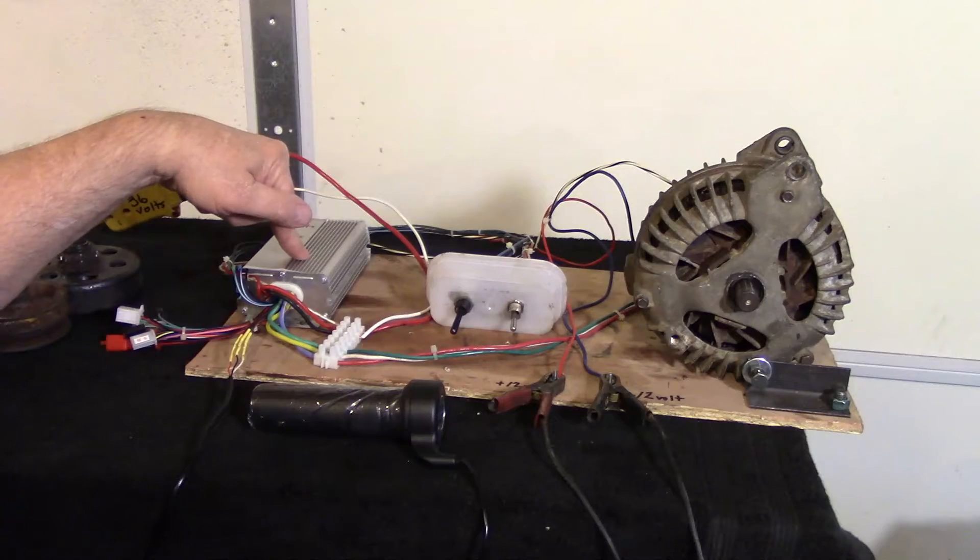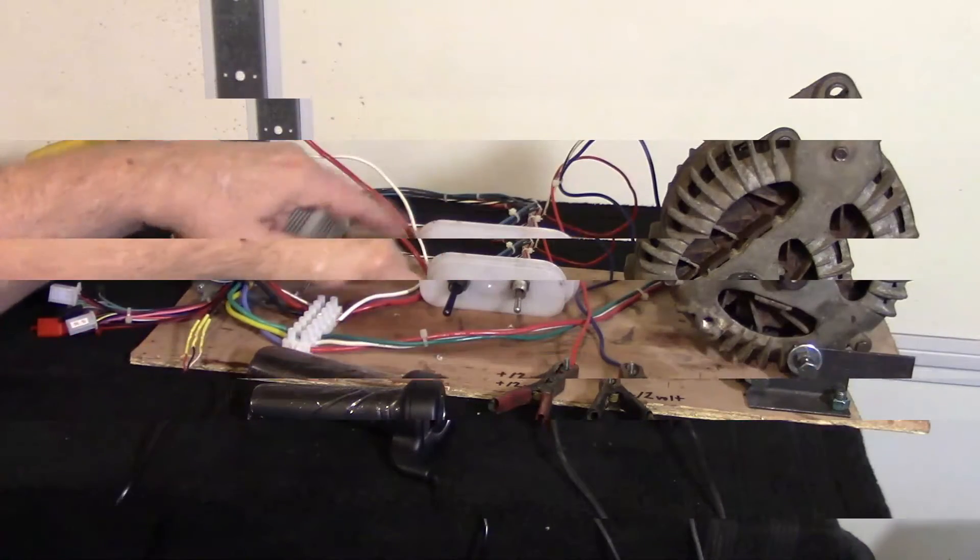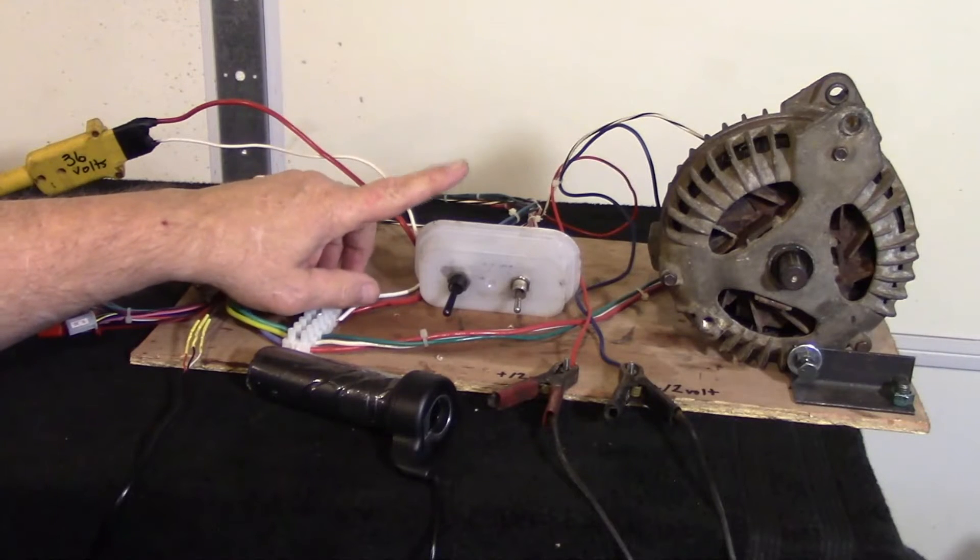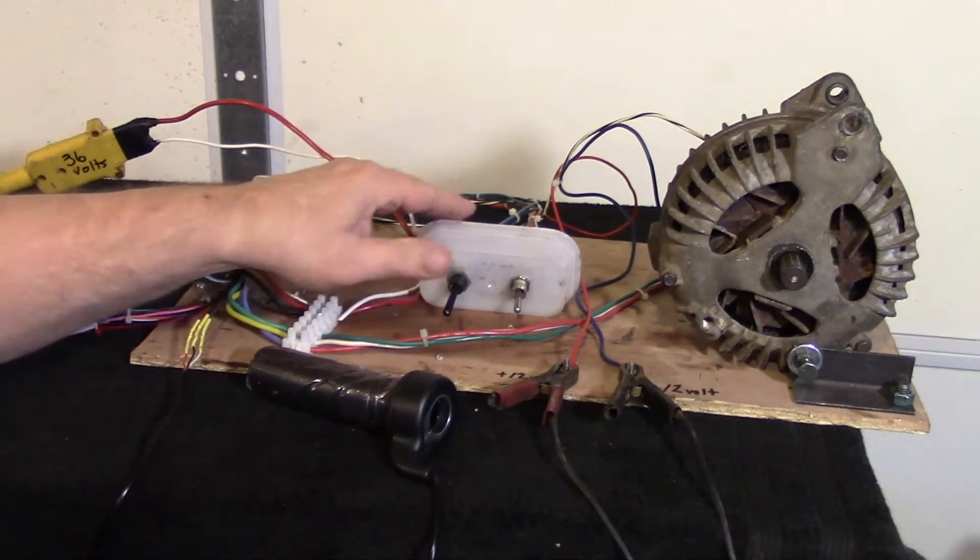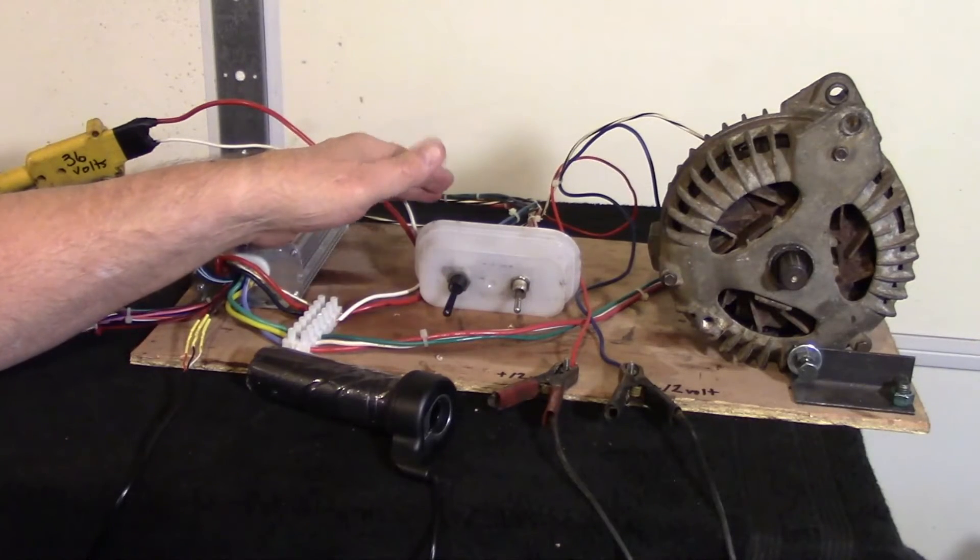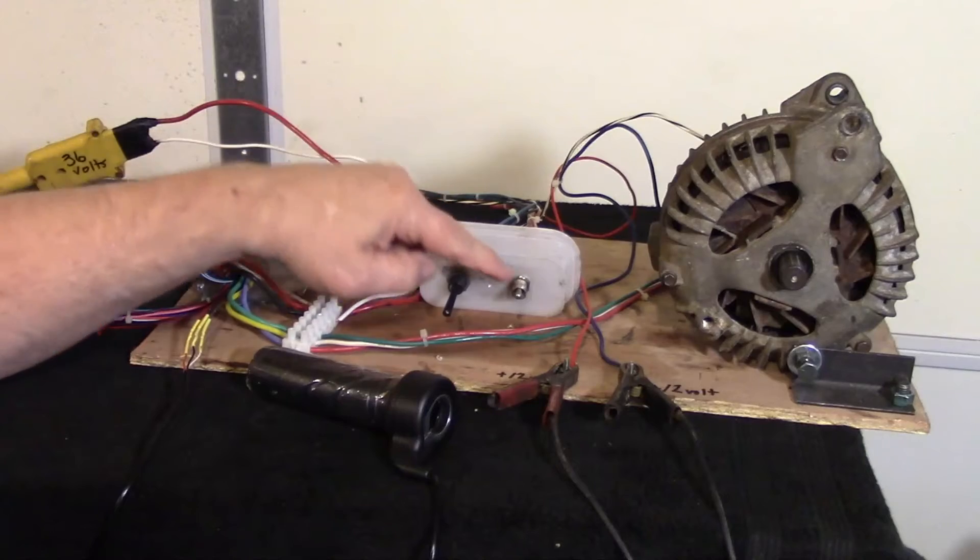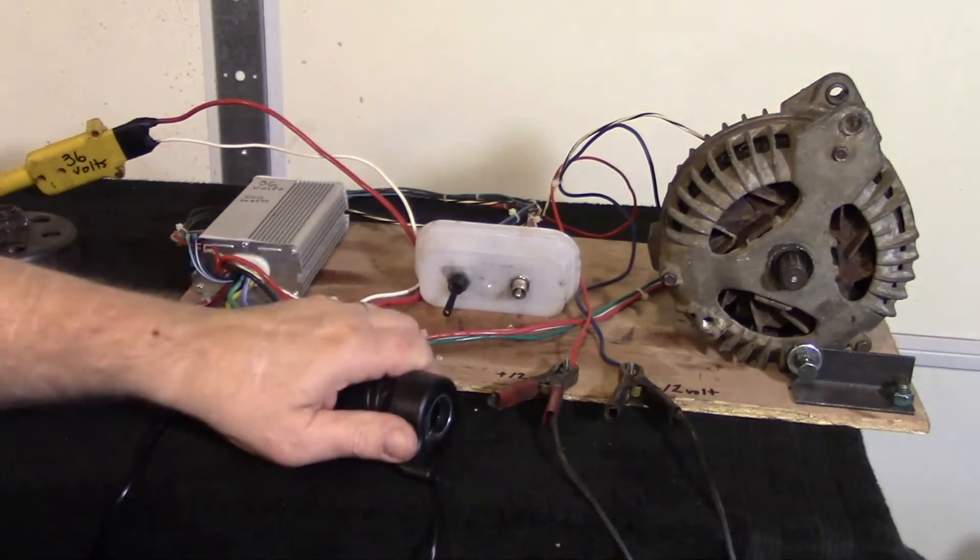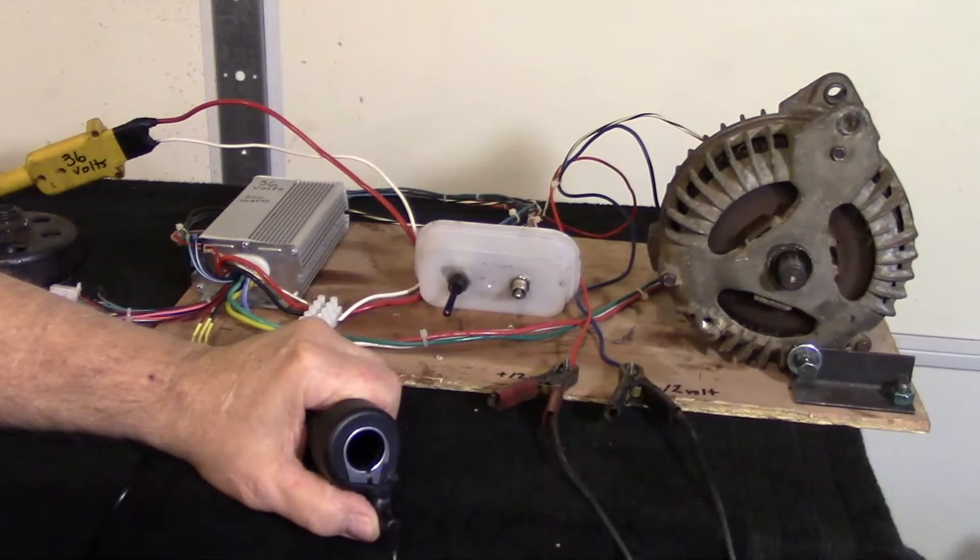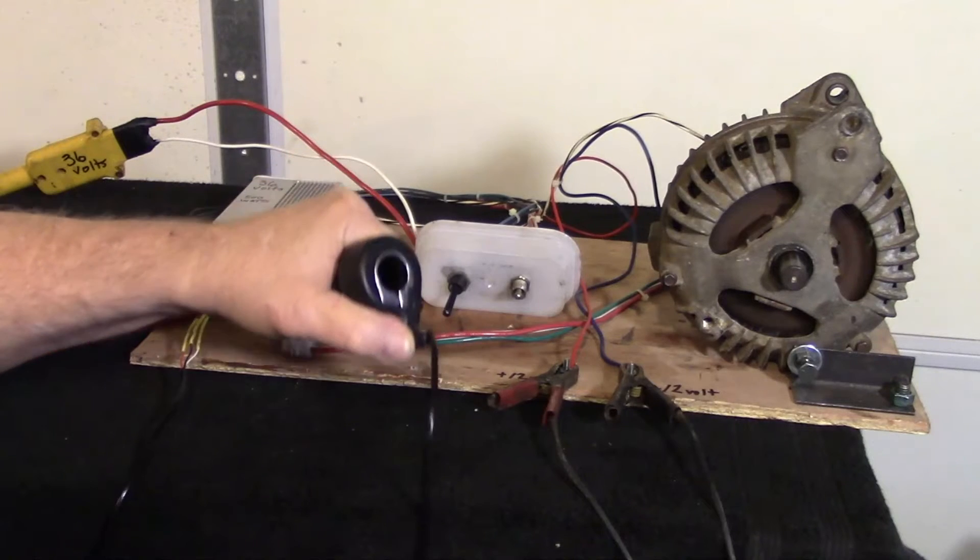This speed controller has three speeds: low, medium, and high. So I'm gonna leave that in the low position. I'm gonna turn my switch on which turns on my speed controller and the fields to my alternator. And that's on low.